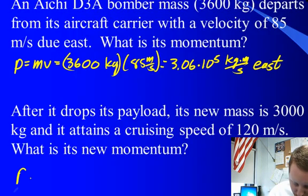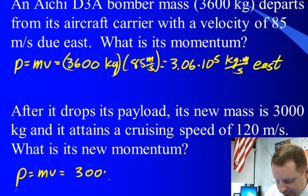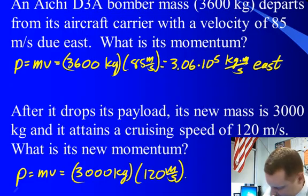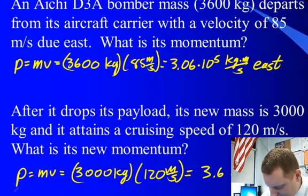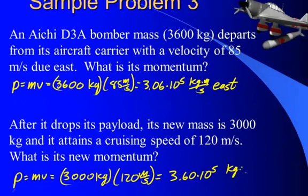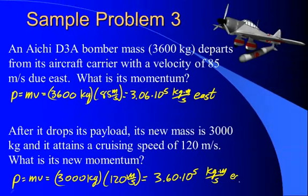Well, its new momentum, we can find the same way, P equals MV. Now its mass is 3000 kilograms, its velocity is 120 meters per second, so that would be a momentum of 3.60 times 10 to the fifth kilogram meters per second east.